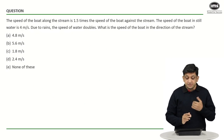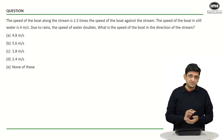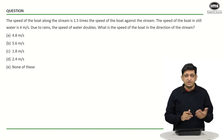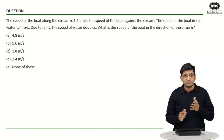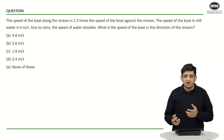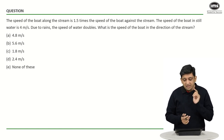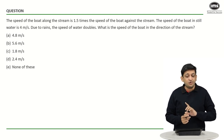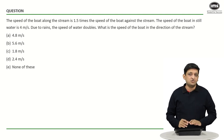In this question, the speed of the boat along the stream is 1.5 times the speed of the boat against the stream. The speed of the boat in still water is 4 meters per second. Due to rains, the speed of water doubles. What is the speed of the boat in the direction of the stream? You can get tangled trying to figure out what is B and S, taking ratios and cross multiplying. But if you know the concept of componendo and dividendo and can apply it without hesitation, you would have done a good job.